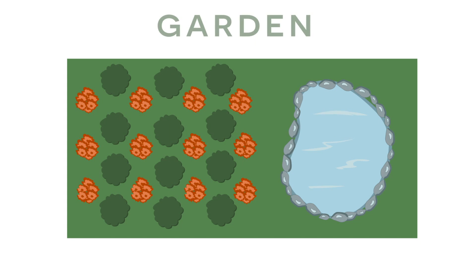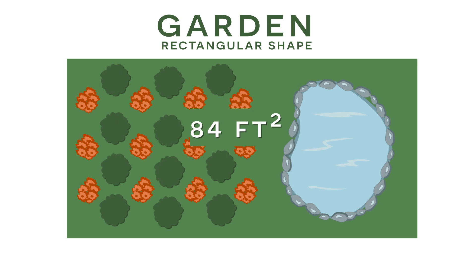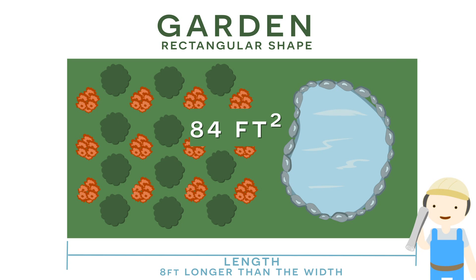So here in this problem we have a garden which has a rectangular shape. And we know that the total area of this garden is 84 square feet. Now the architect wants to make the length 8 feet longer than the width. So using this information I want you to find the dimensions of this garden.